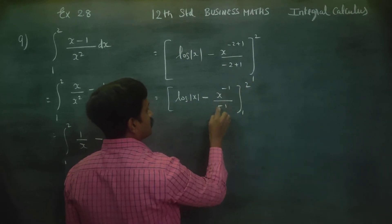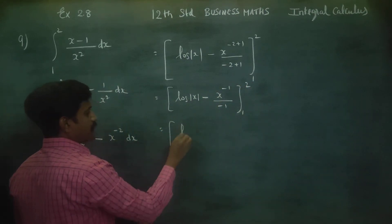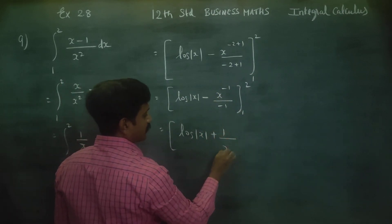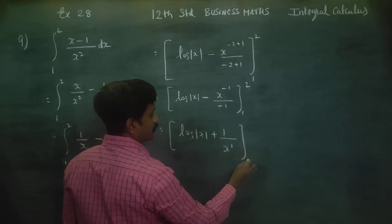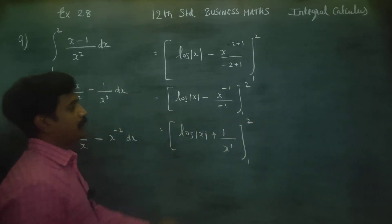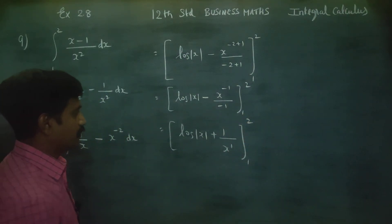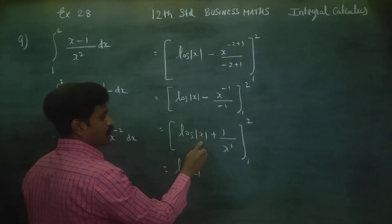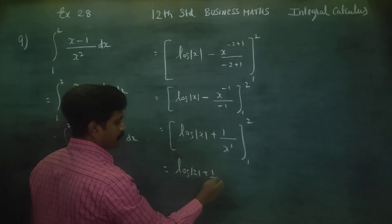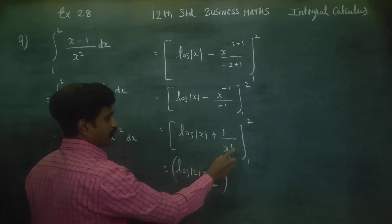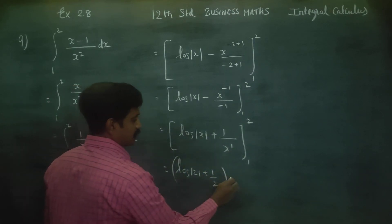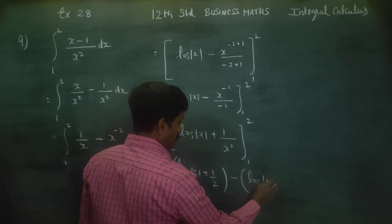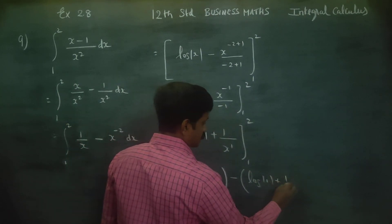Evaluating from 1 to 2: upper limit minus lower limit. Substituting the upper limit 2 first: log 2 plus 1 by 2. Then substituting the lower limit 1: log 1 plus 1 by 1.